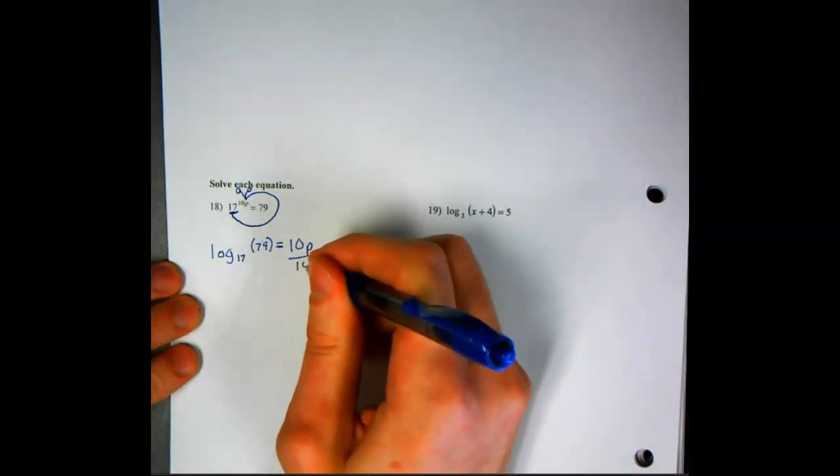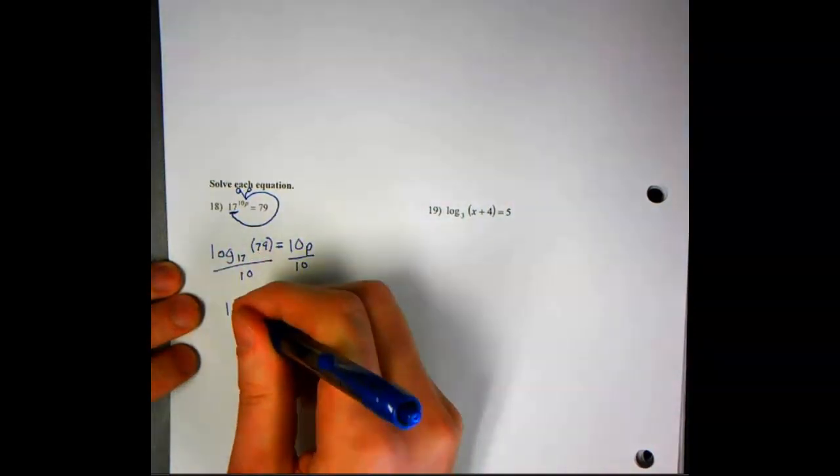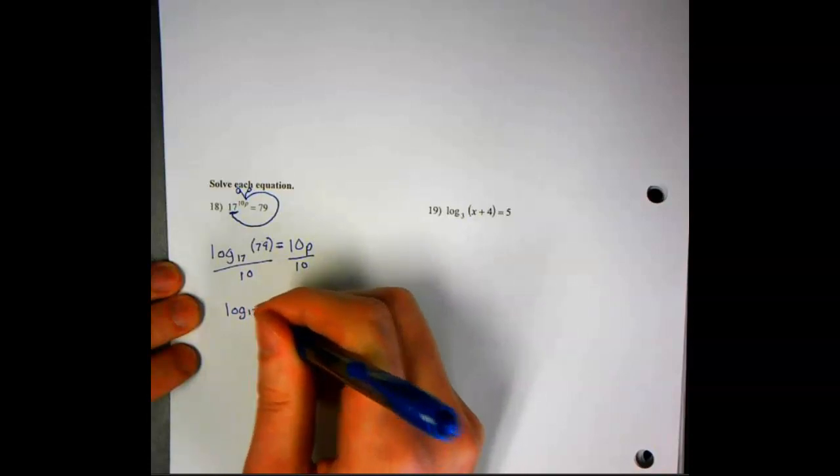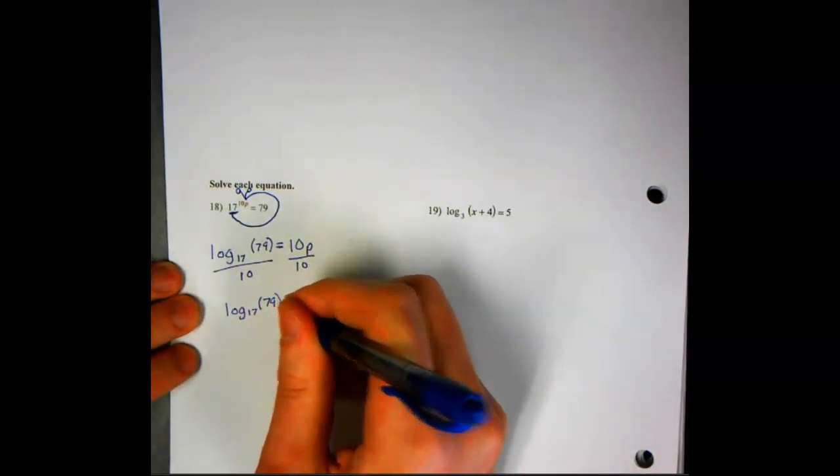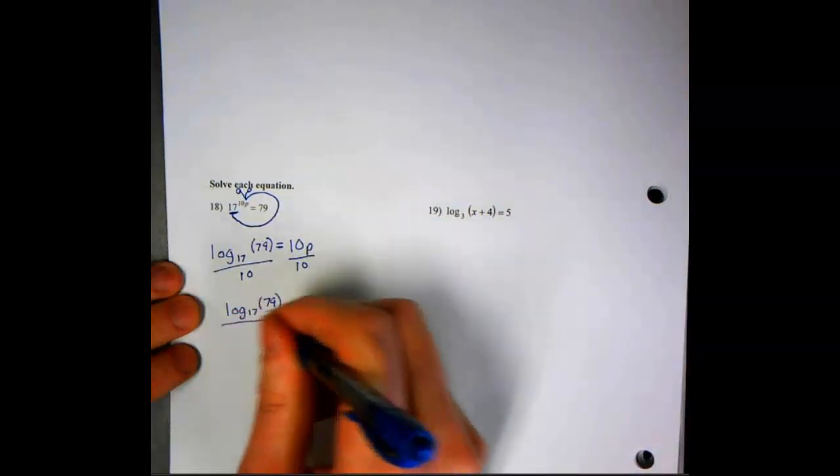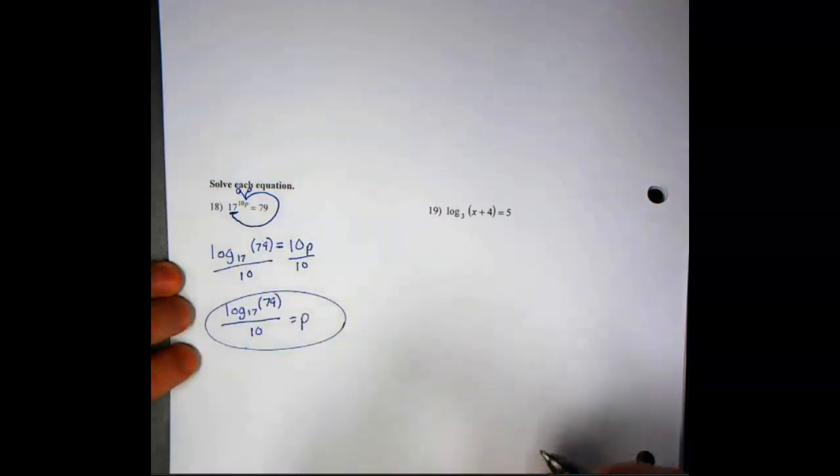So we're going to divide both sides by that 10. Remember, log is an operator, so we're just going to leave that as log base 17 of 79 divided by 10 equals p. And that's your answer.